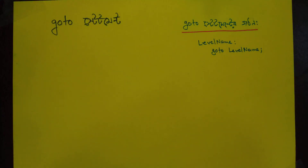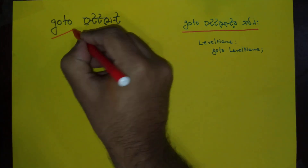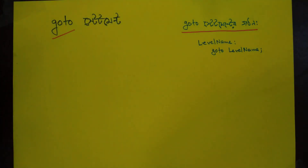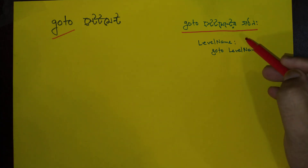This program is a normal sequence, which is a jumping statement of go-to. This is a kind of jumping statement, which means loop control statement.